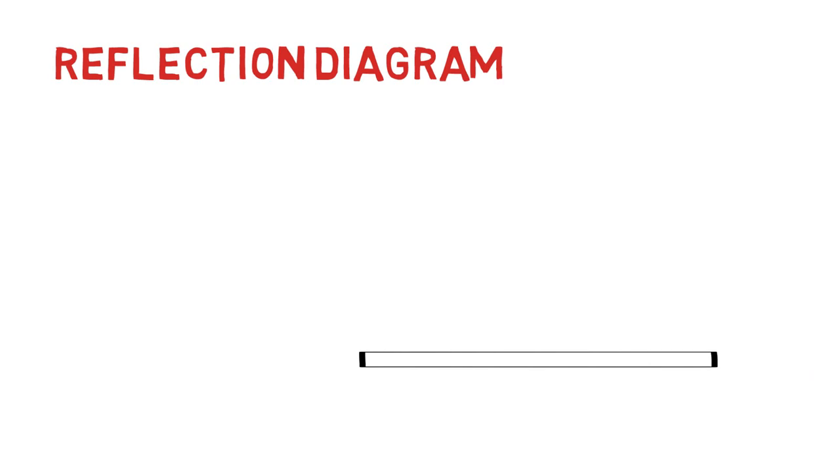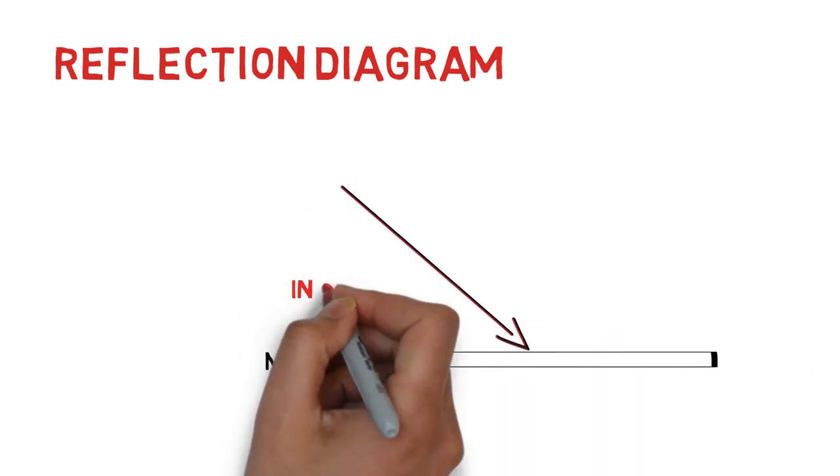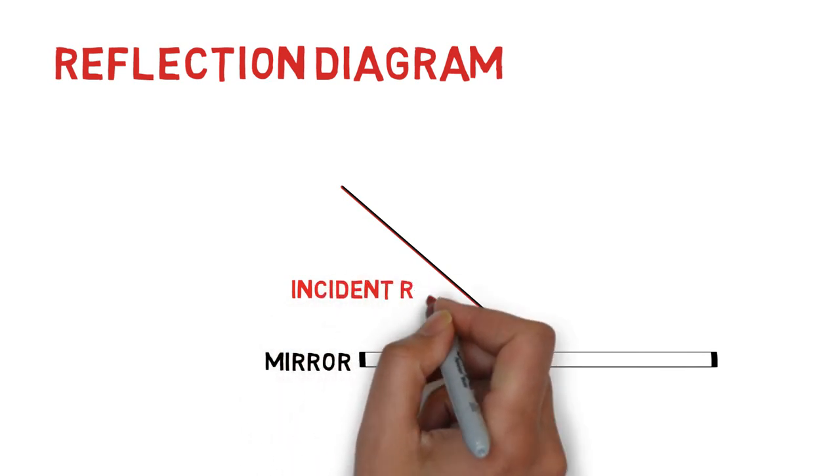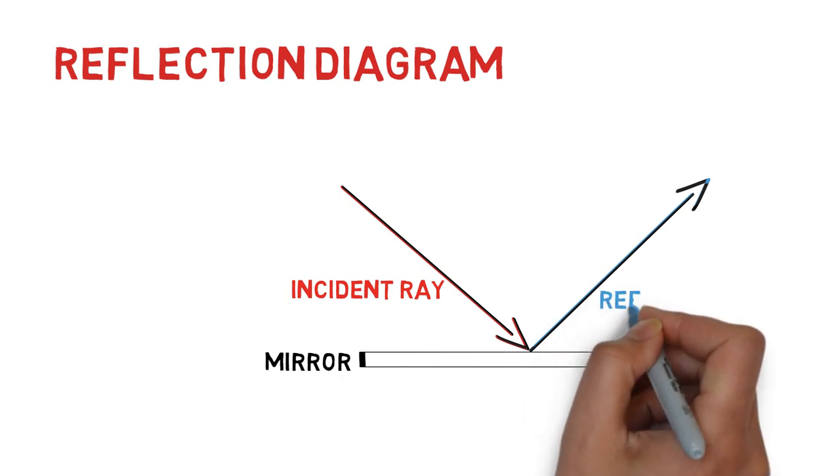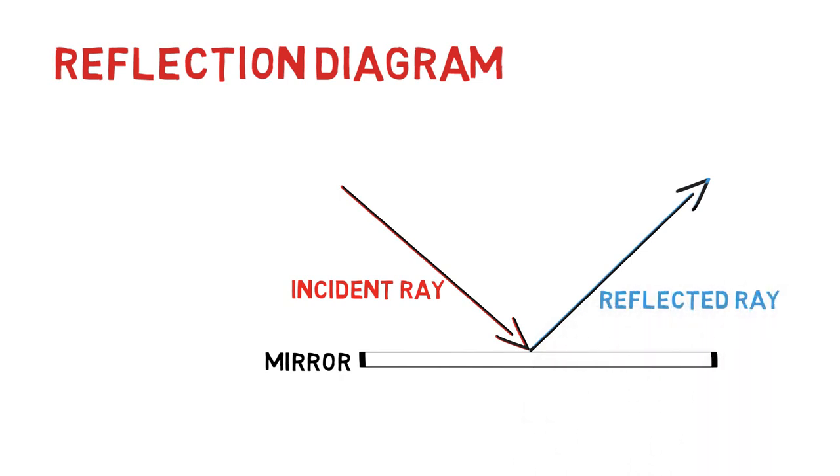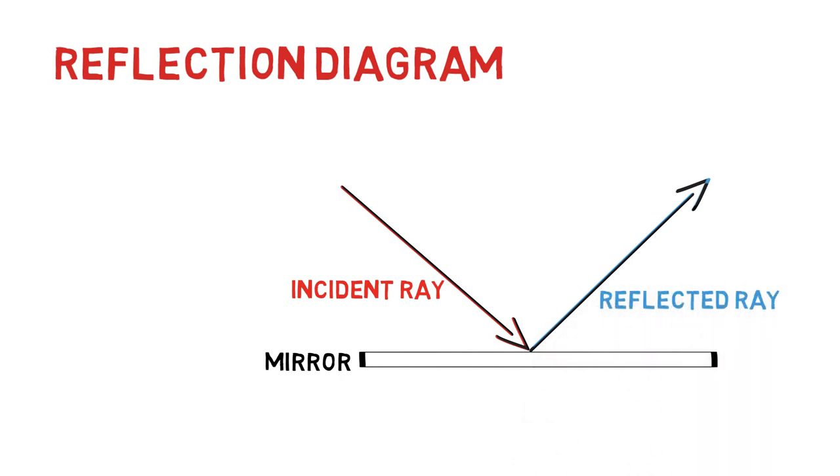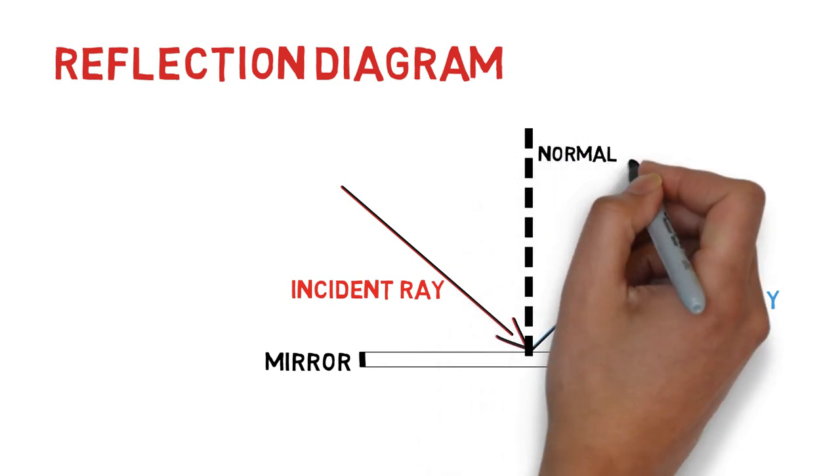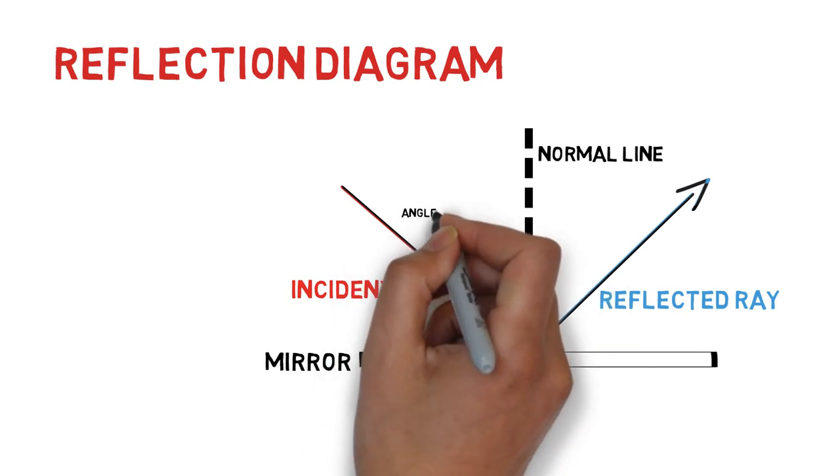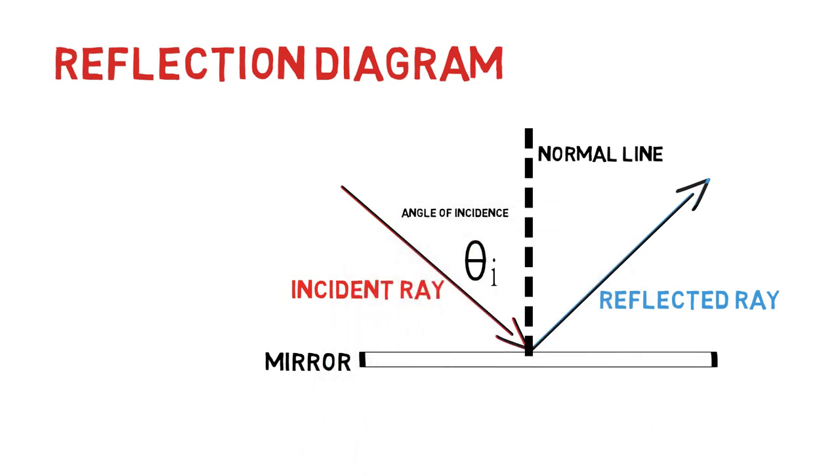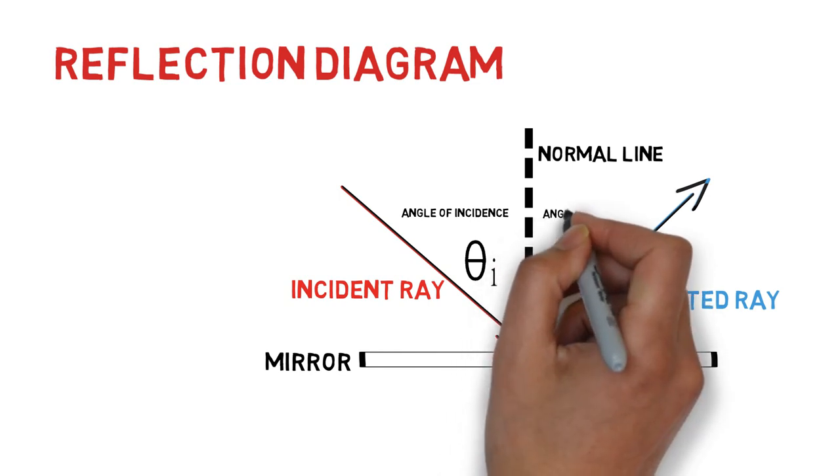In our reflection, we have our mirror, a light wave being emitted toward the mirror known as the incident ray, and the same light wave bouncing off the mirror known as the reflected ray. At the point where the incident ray strikes the mirror, a perpendicular line can be drawn known as the normal line. This line creates two separate angles known as the angle of incidence and the angle of reflection.